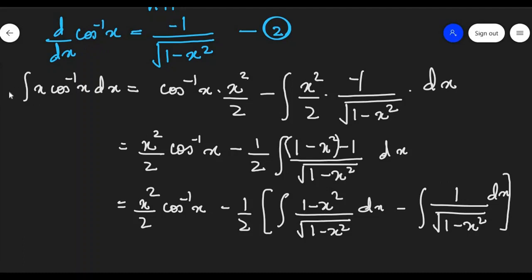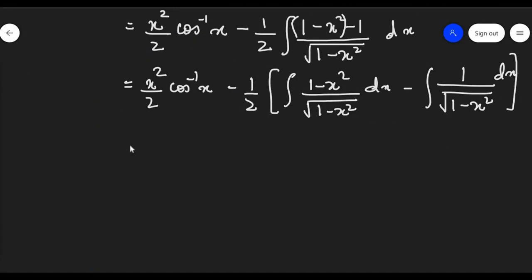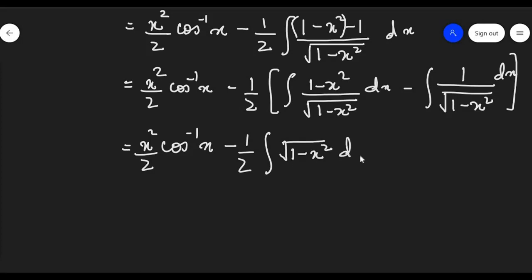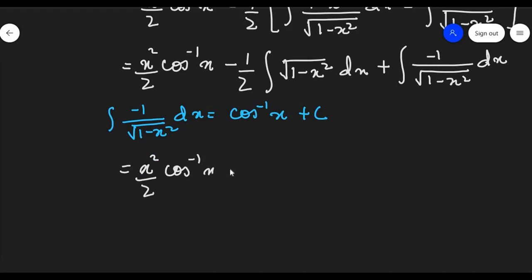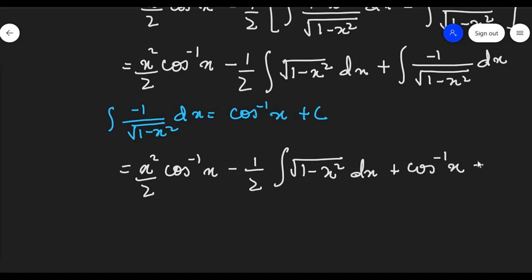So I can write the first term as x squared by 2 times cos inverse x, minus 1/2 times integration of — this term simplifies to square root of 1 minus x squared dx — minus, plus integration of minus 1 upon square root of 1 minus x squared dx. We know that integration of minus 1 upon square root of 1 minus x squared is cos inverse x. Using this identity, we write: x squared by 2 cos inverse x, minus 1/2 times integration of square root of 1 minus x squared dx, plus cos inverse x plus c.